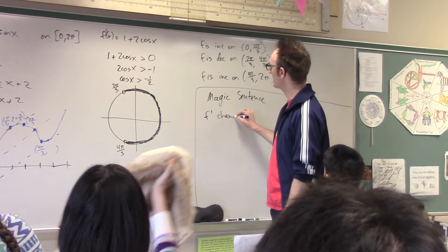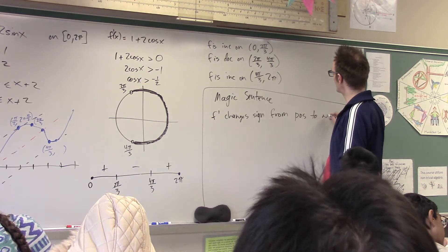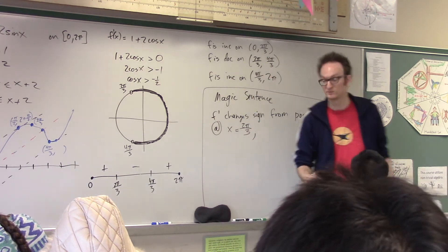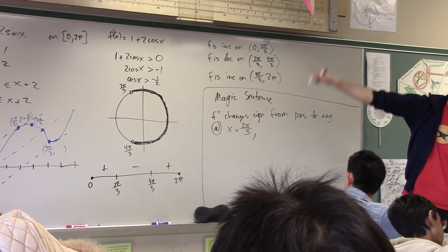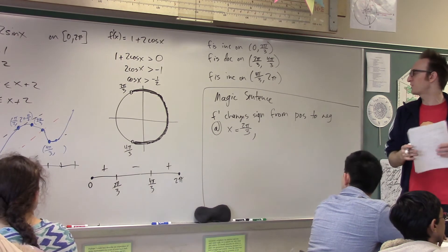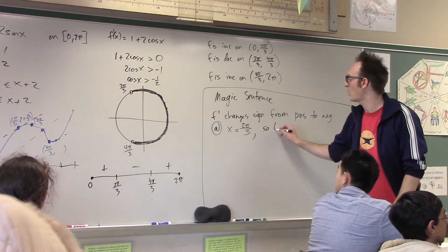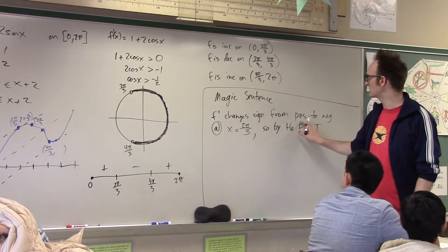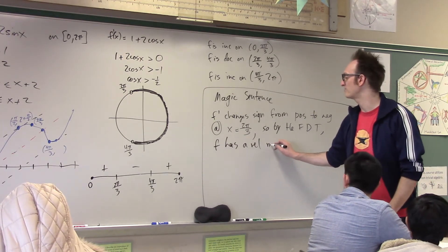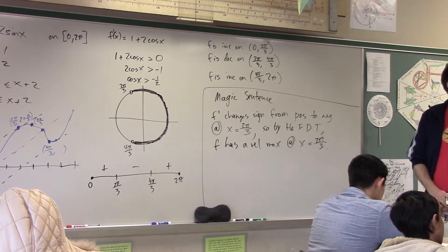So, okay, so here's the full sentence. f prime changes sign from positive to negative at x equals 2 pi over 3. Fact, which is supported by my sign chart, supported by my work. Since there is a sign change in the derivative, we have just proved this whole theorem that says, if the derivative was positive, it's increasing, and then the derivative is negative, it's decreasing, so there must have been a relative max. So that's just what we say. So, by the first derivative test, which saves us from having to say all that all over again, conclusion, f has a relative max at x equals 2 pi over 3. Can you guys handle that?